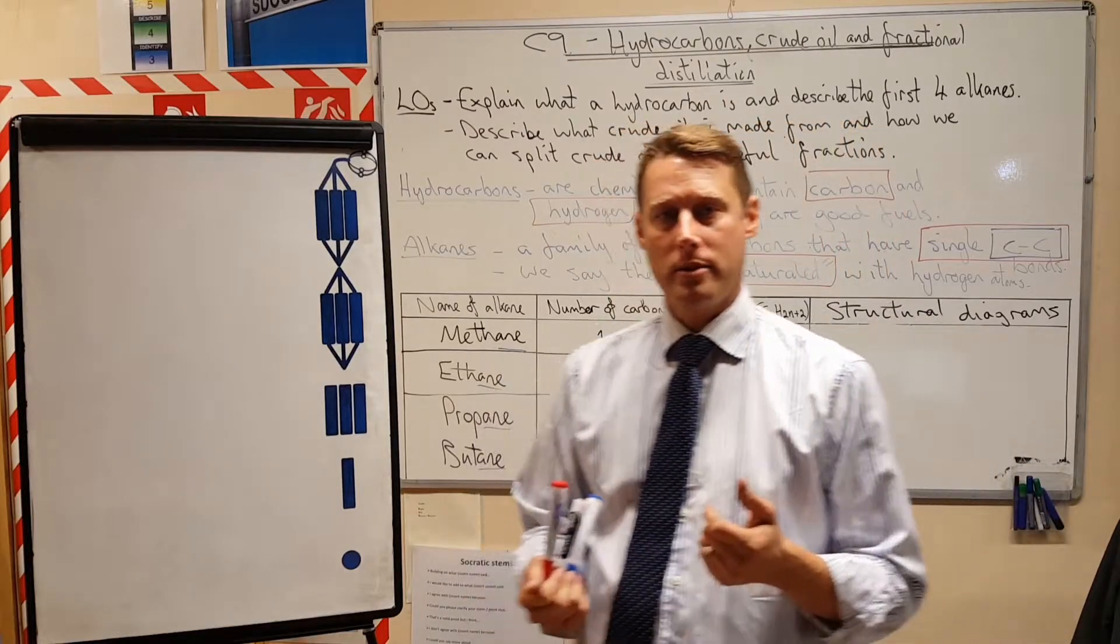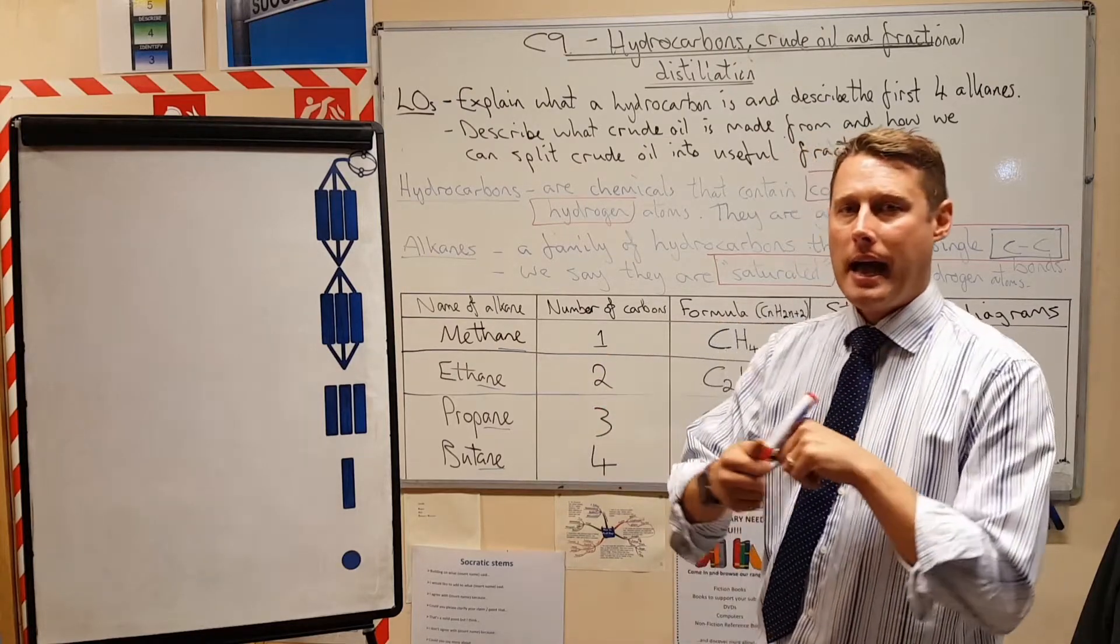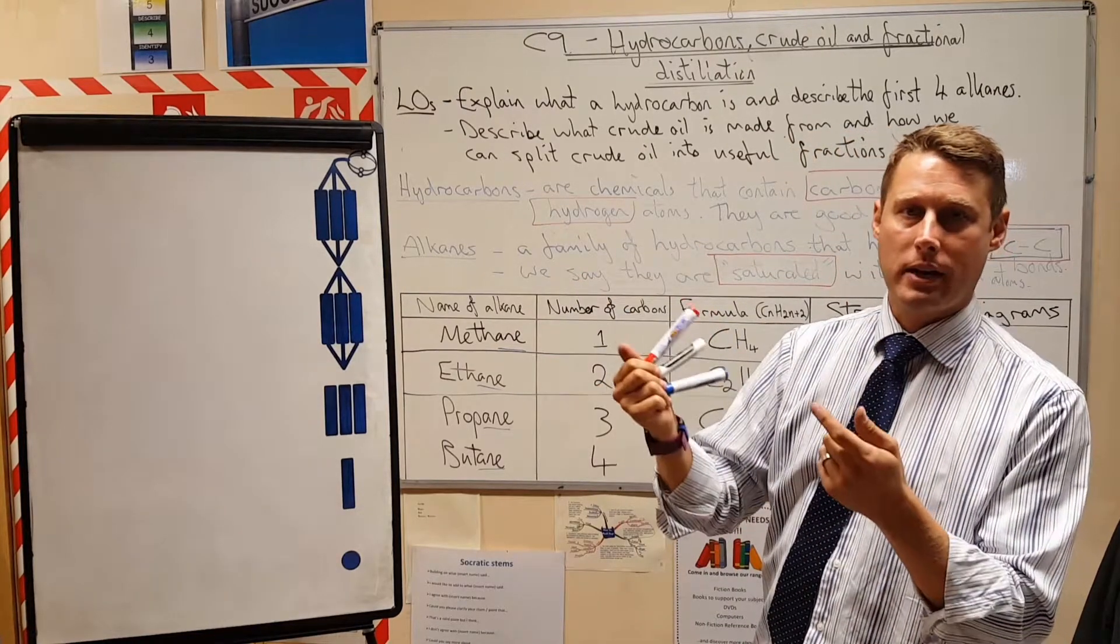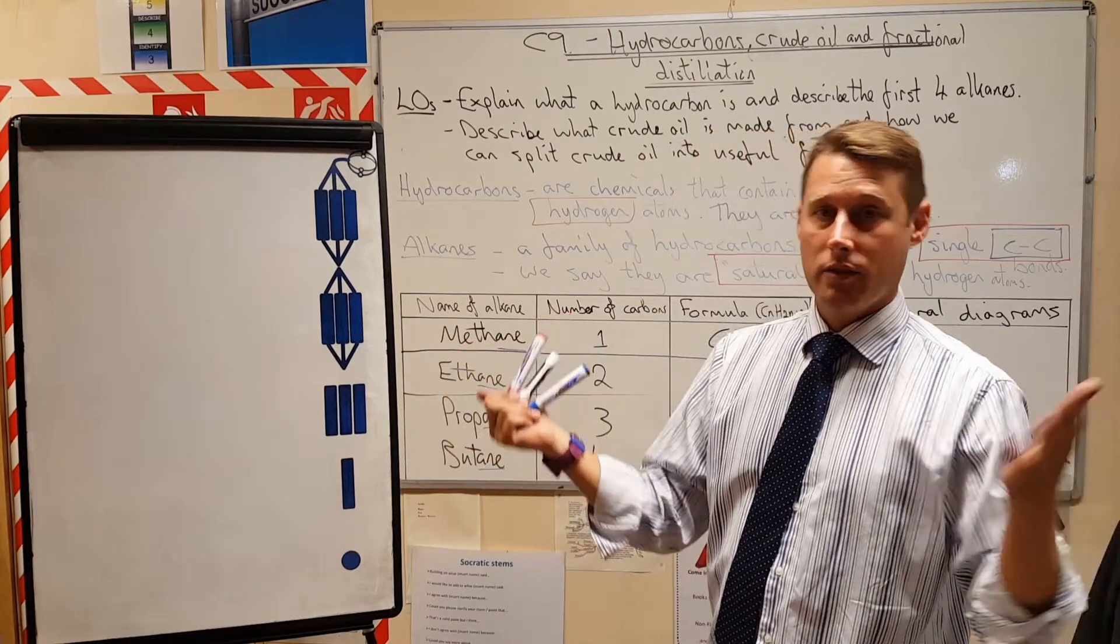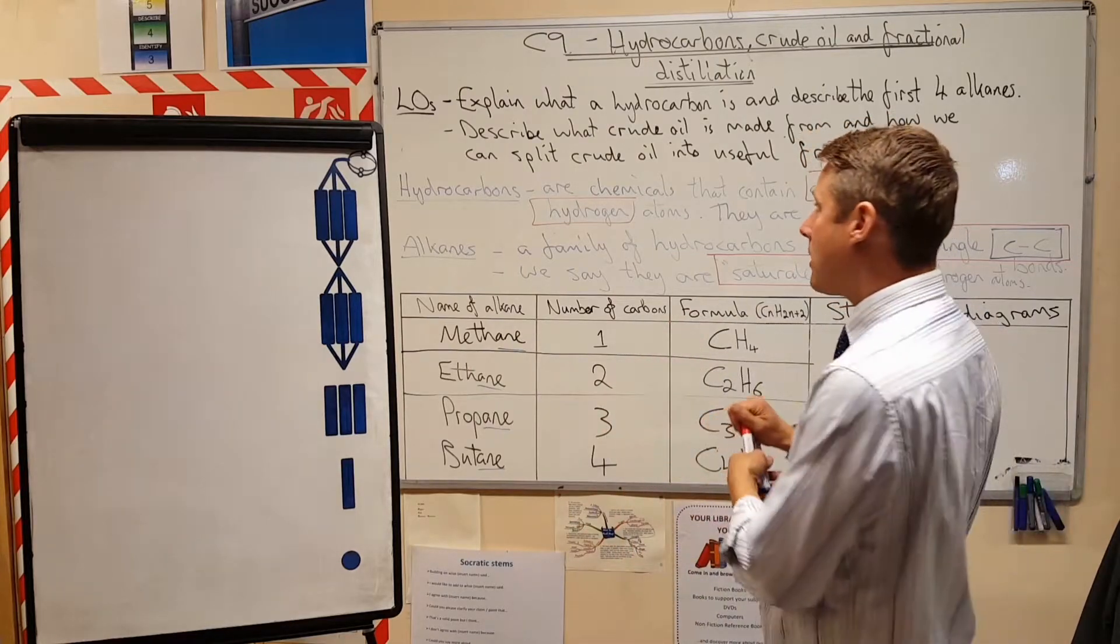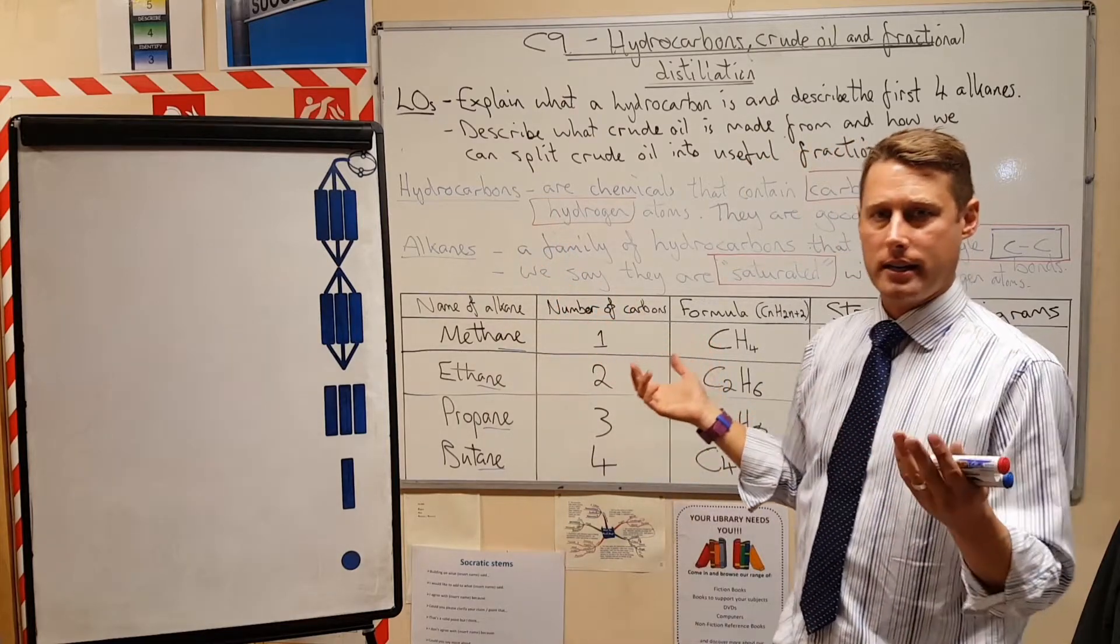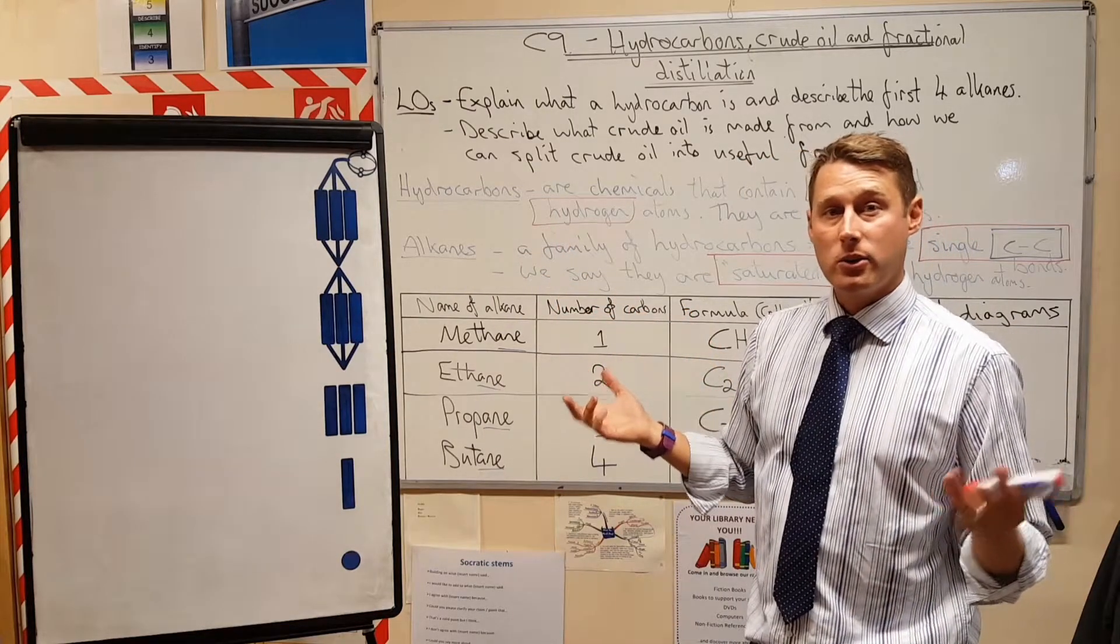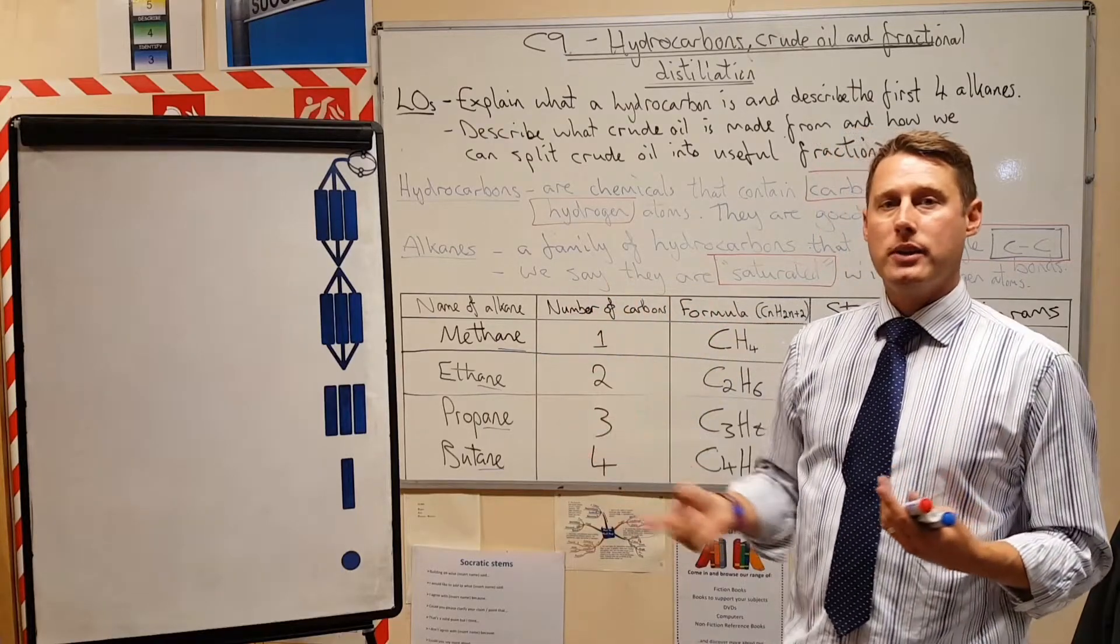So today we've been looking at hydrocarbons and crude oil as a mixture of hydrocarbons, and looking at how we can separate crude oil into each of the different fractions of hydrocarbon fuel that it contains. So as a bit of a recap, we looked firstly at what the word hydrocarbon means and decided that a hydrocarbon is a molecule that has a carbon backbone and hydrogen atoms bonded to it.